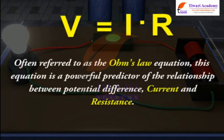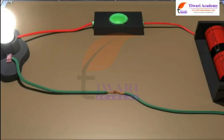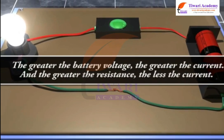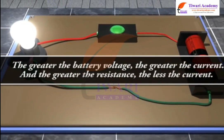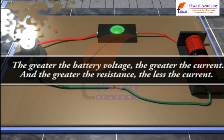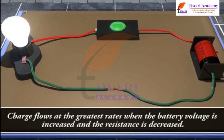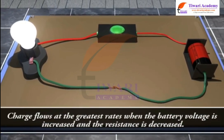Often referred to as the Ohm's Law equation, this equation is a powerful predictor of the relationship between potential difference, current and resistance. The greater the battery voltage, the greater the current, and the greater the resistance, the less the current. Charge flows at the greatest rates when the battery voltage is increased and the resistance is decreased.